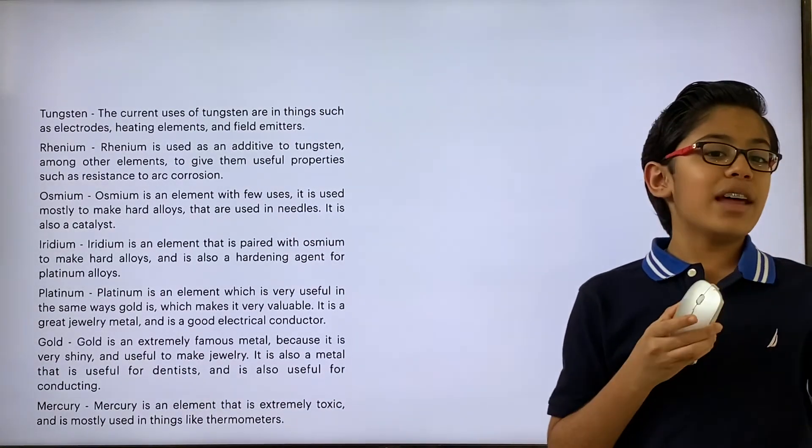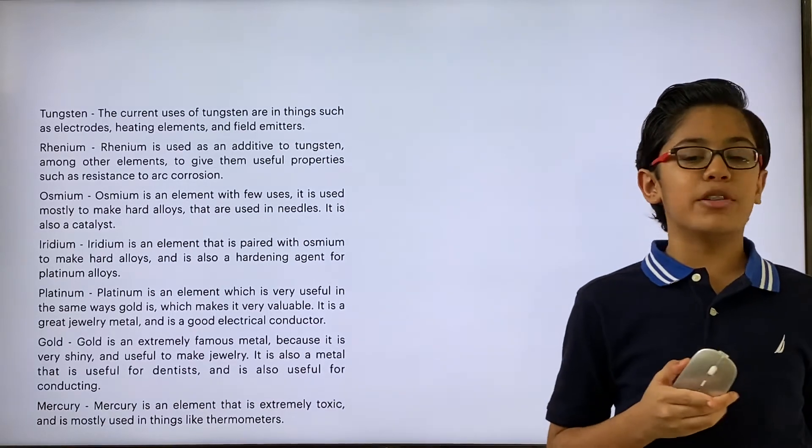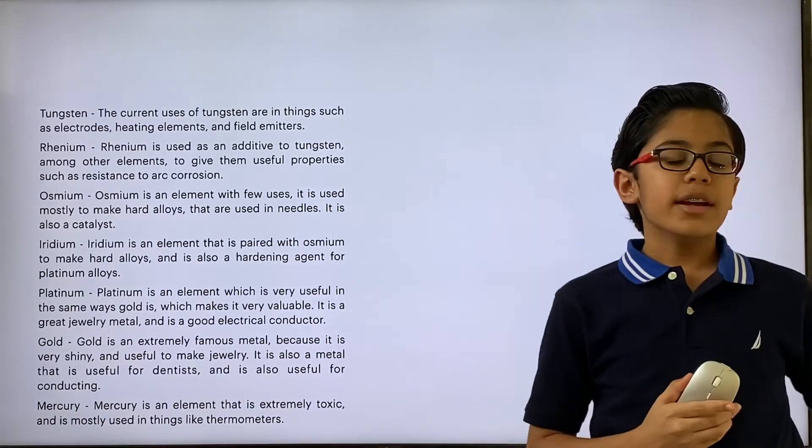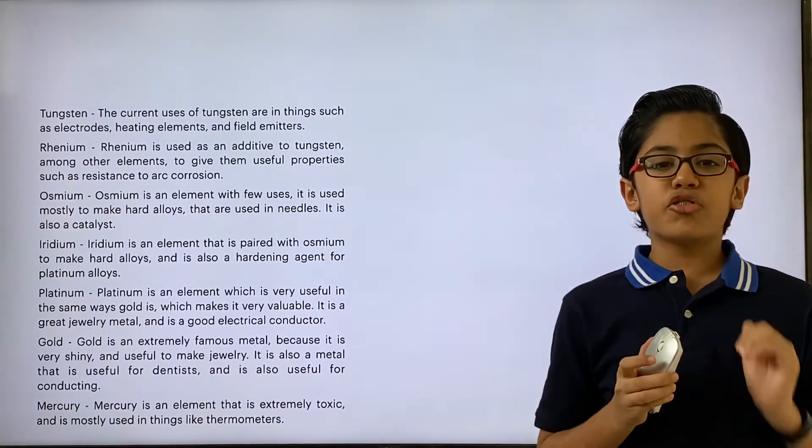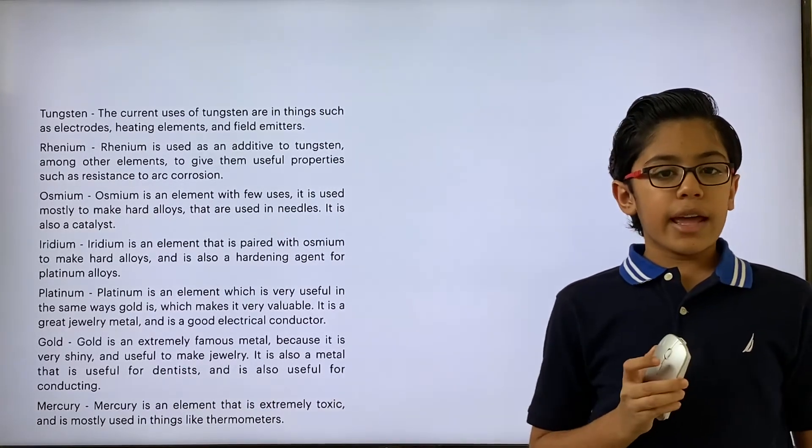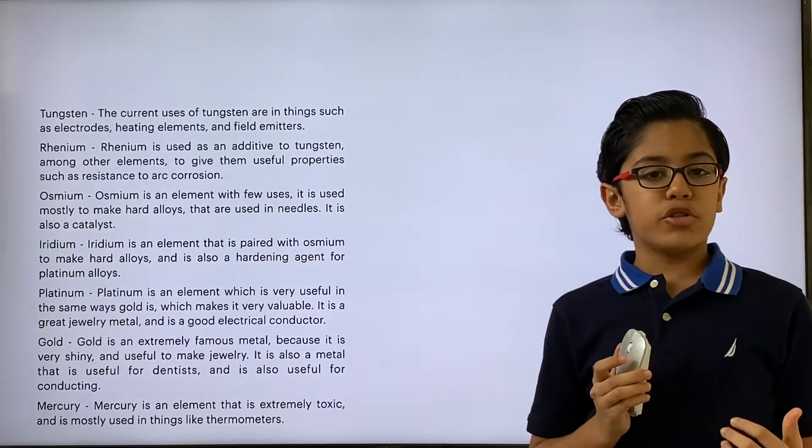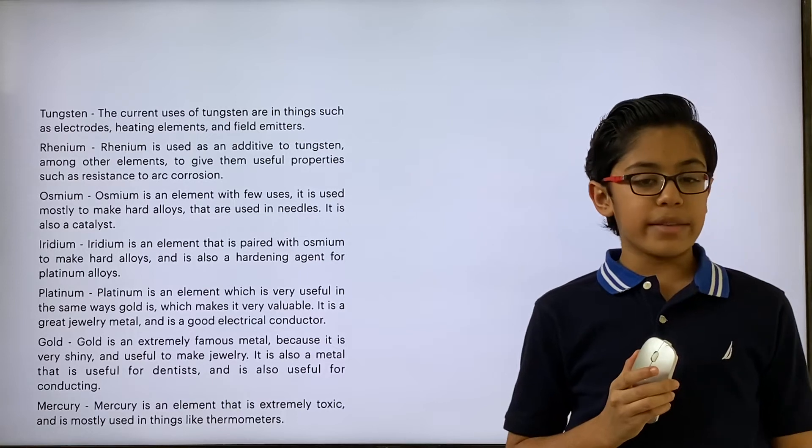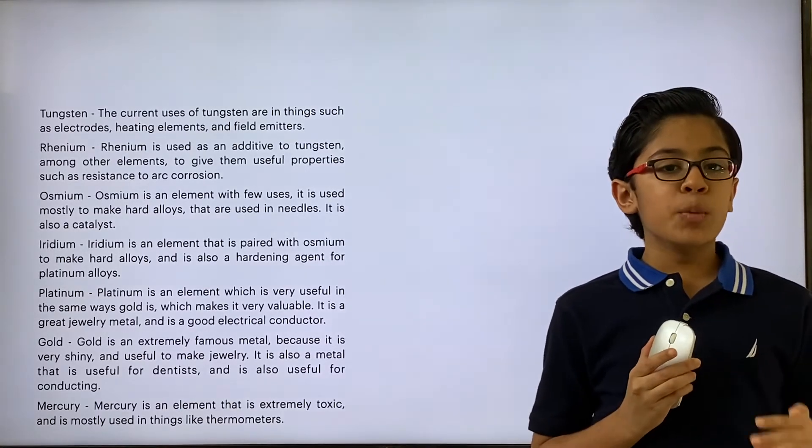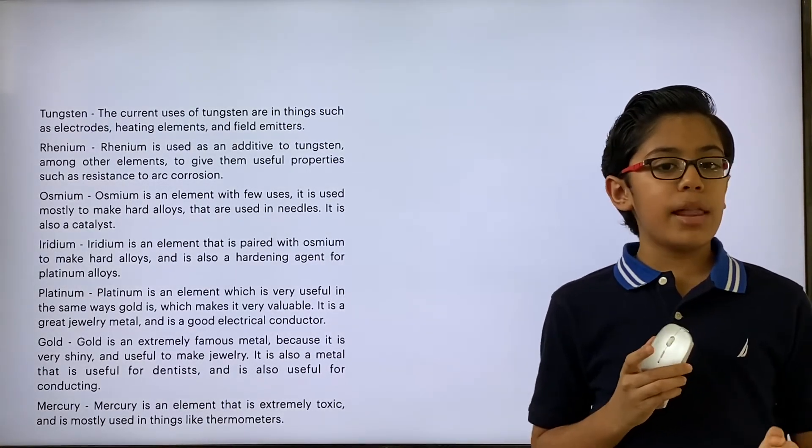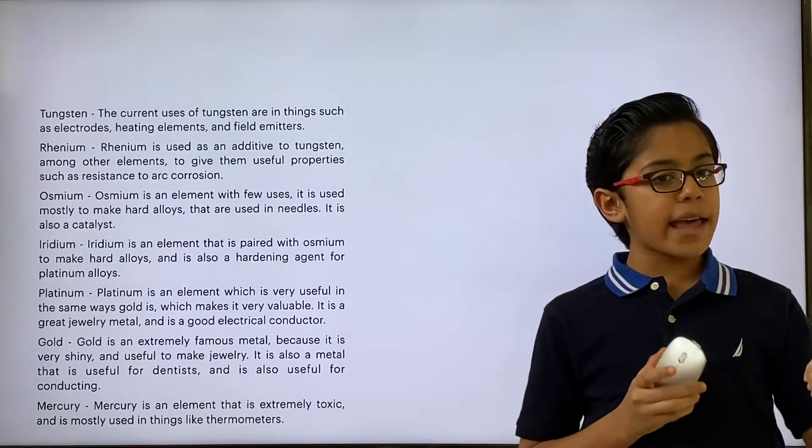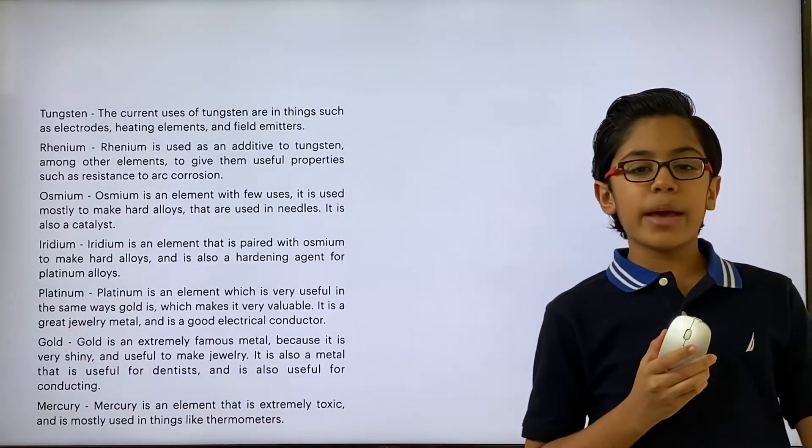The last element in the entire transition element group, mercury. Mercury is an extremely deadly element. It is one of the only two elements, metals to be exact, that is a liquid at room temperature. It also has the ability to phase form into a gas at room temperature, and this is what makes it so deadly.